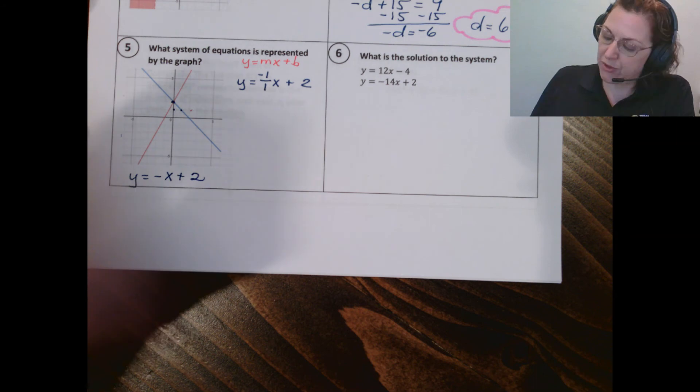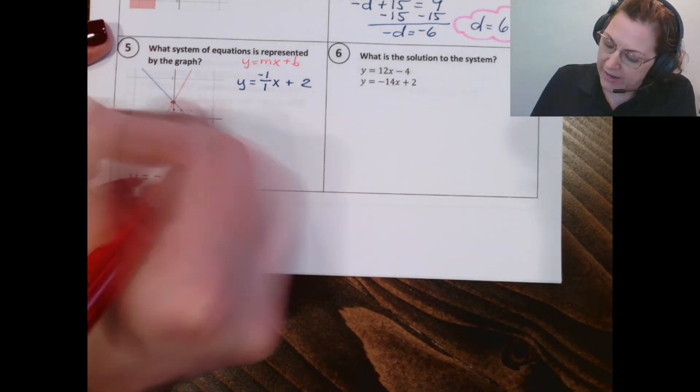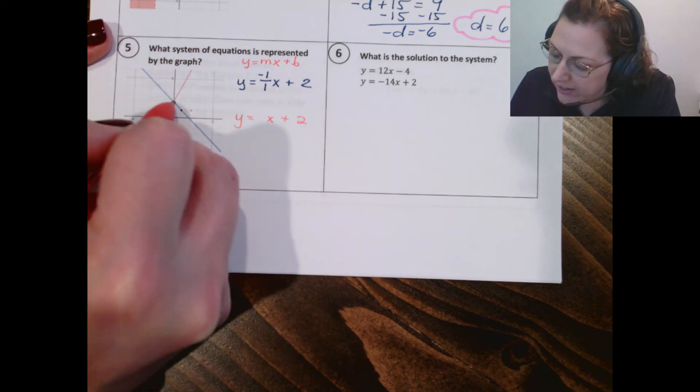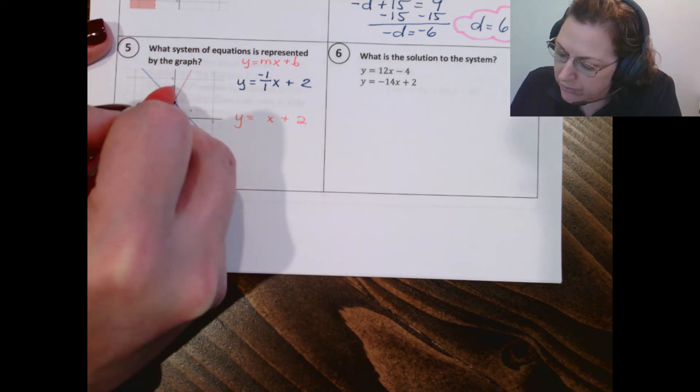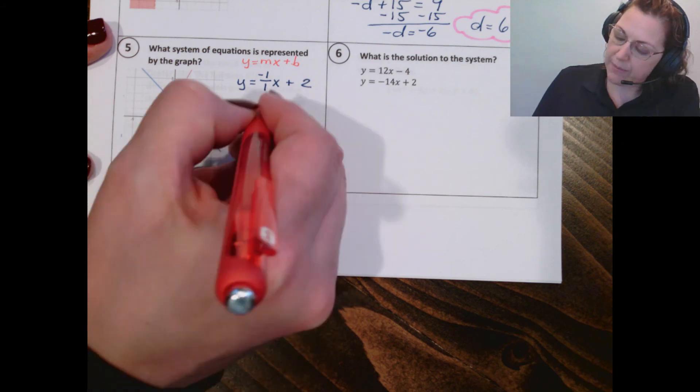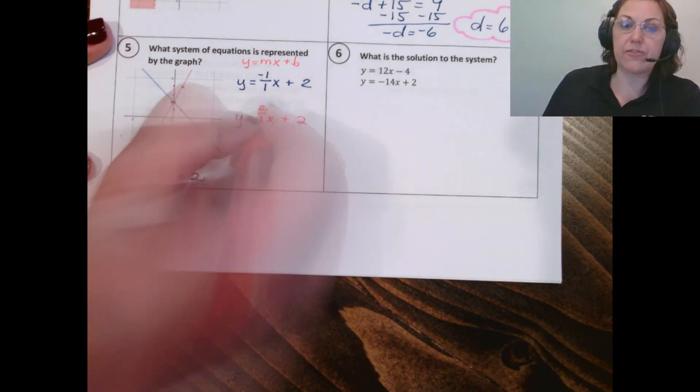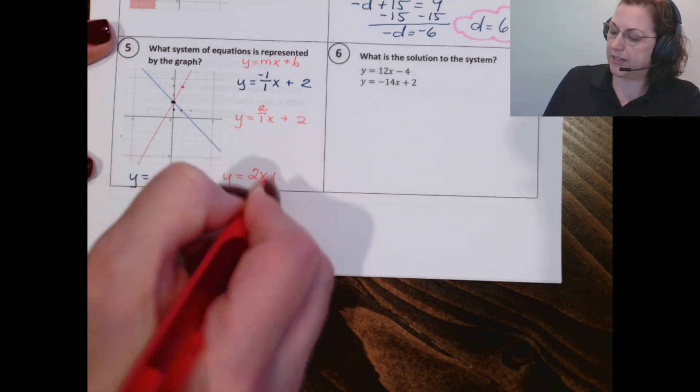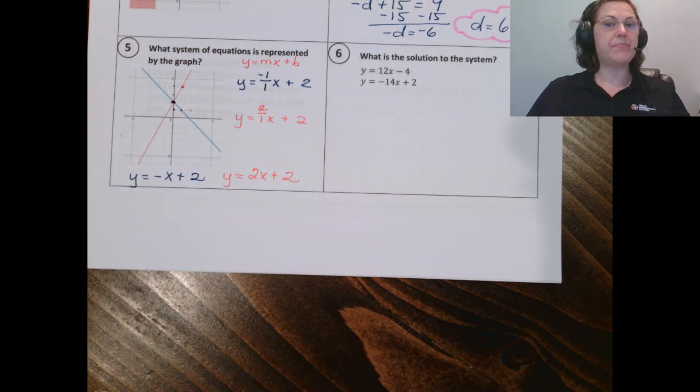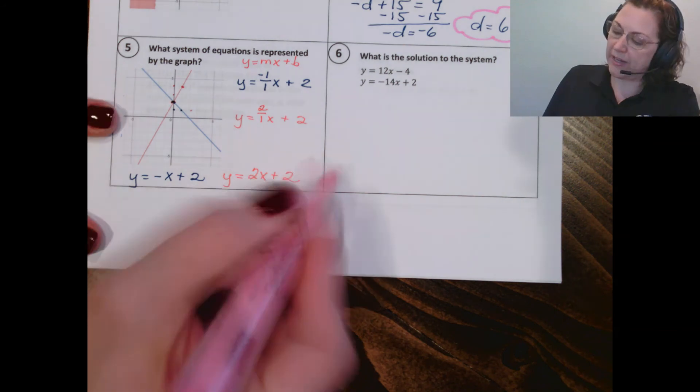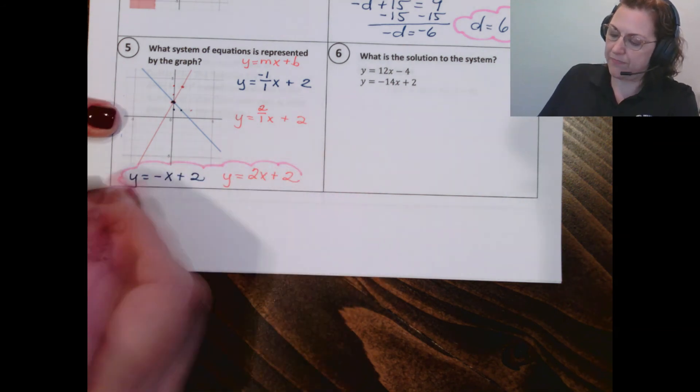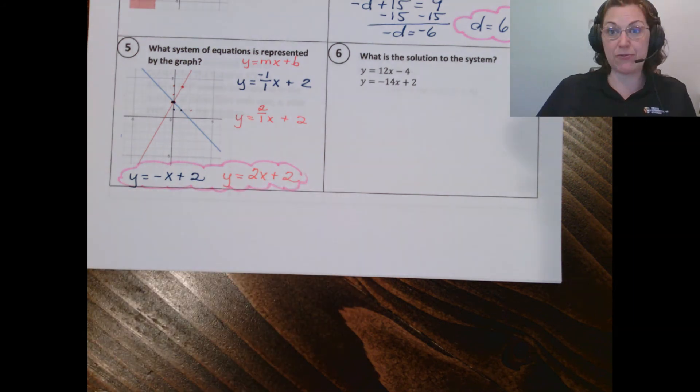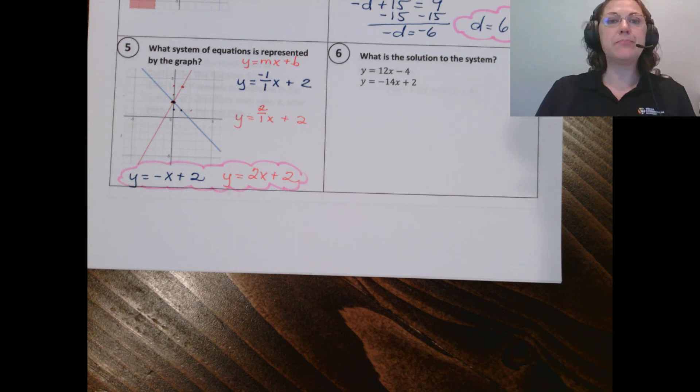Now let's write the equation for the red line. It has a y intercept of two. And let's check its slope. From here, it goes up to one, two and right one. So it's up two, right one for its slope. And so if we simplify that, we get y equals two x plus two for our two equations that are graphed here. Remember to use that y equals mx plus b formula to help you write those equations.